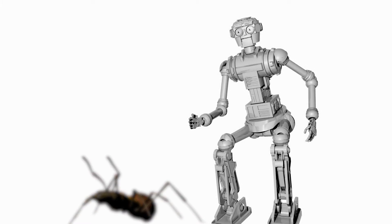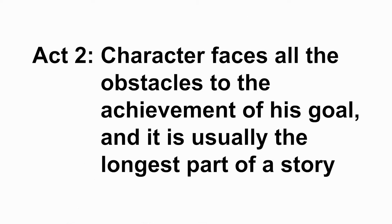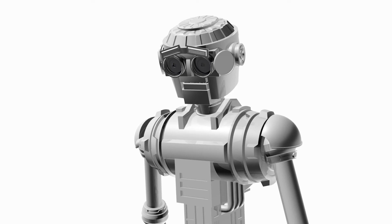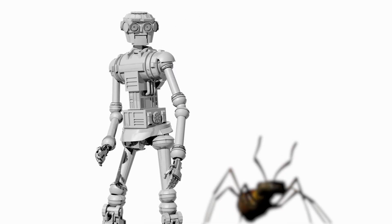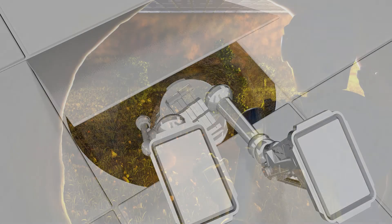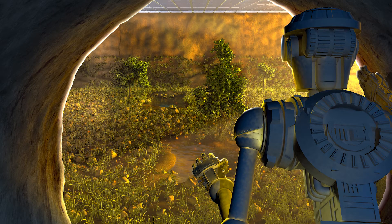After he made his decision to pursue the ant, we enter act two. Act two is where the character faces all the obstacles to the achievement of his goal and it is usually the longest part of a story. The robot pursues the ant but the ant enters into a crack on the floor. Repair robots arrive and seal the breach. Disappointed, the robot starts to walk back to the factory when he spots another ant. He follows it until it enters another crack in the floor. Before the repair robots arrive, the robot opens the tile and finds a tunnel. He goes down the tunnel and discovers an underground forest world where the ants live. But the repair robots discover the crack and close the breach, sealing the robot inside.